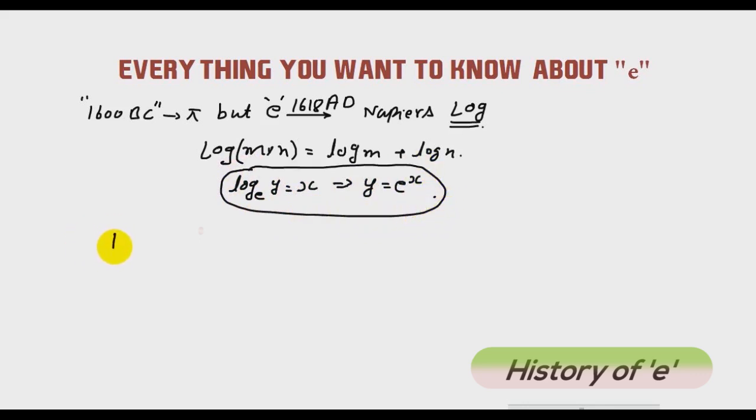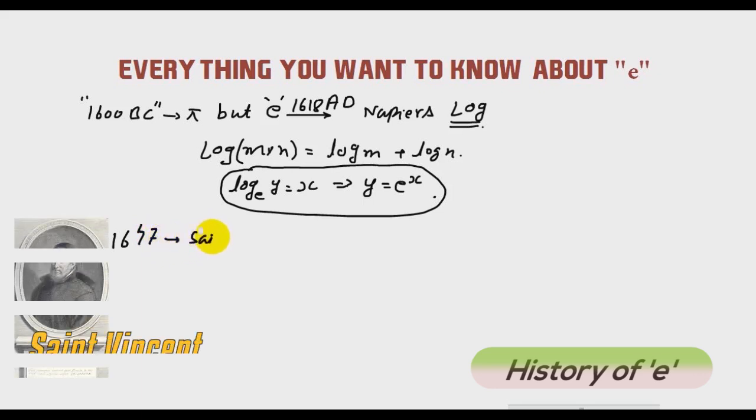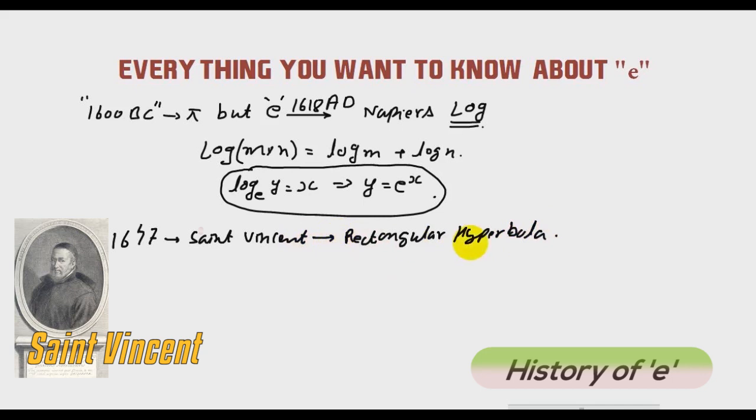In year 1647, famous mathematician Saint Vincent, while working on rectangular hyperbola, also used e. But he also was unable to recognize the power of e.